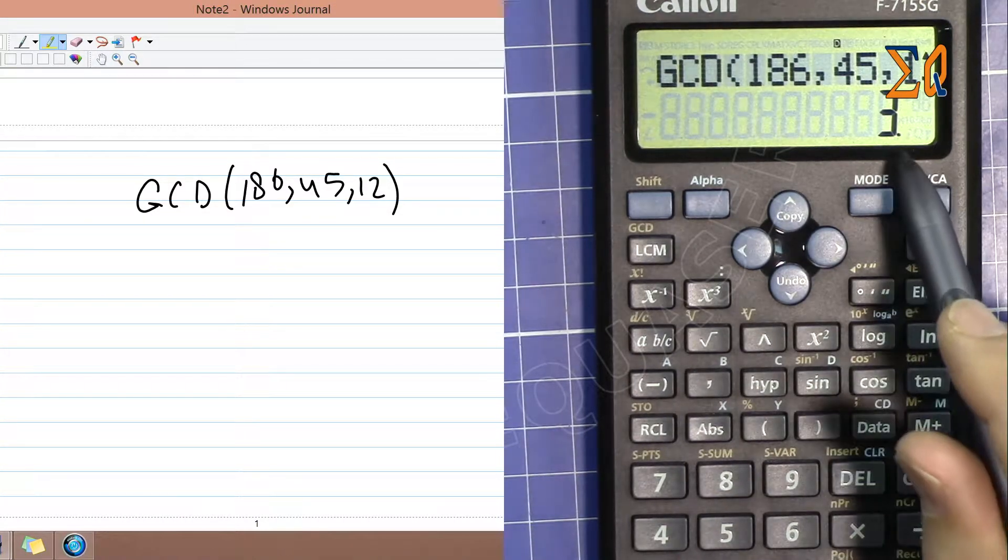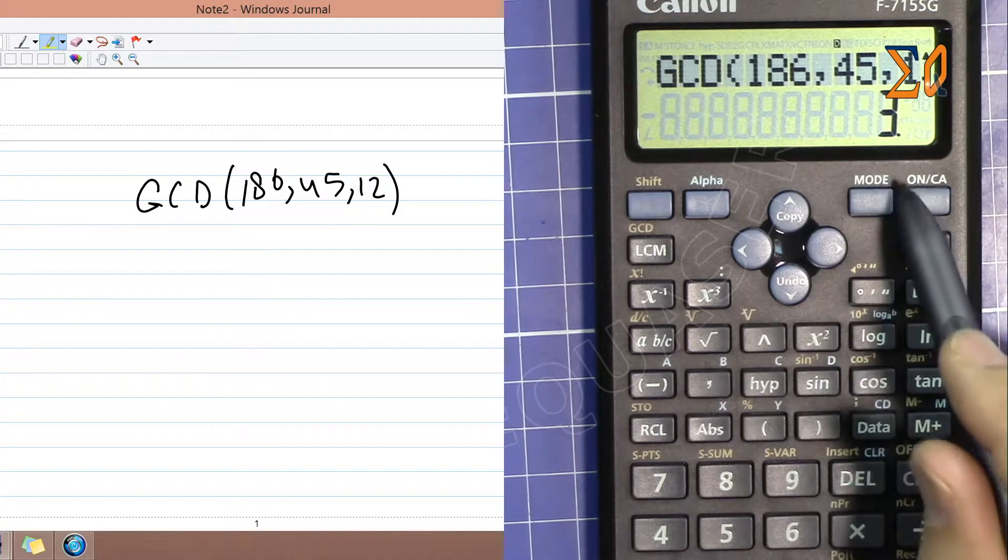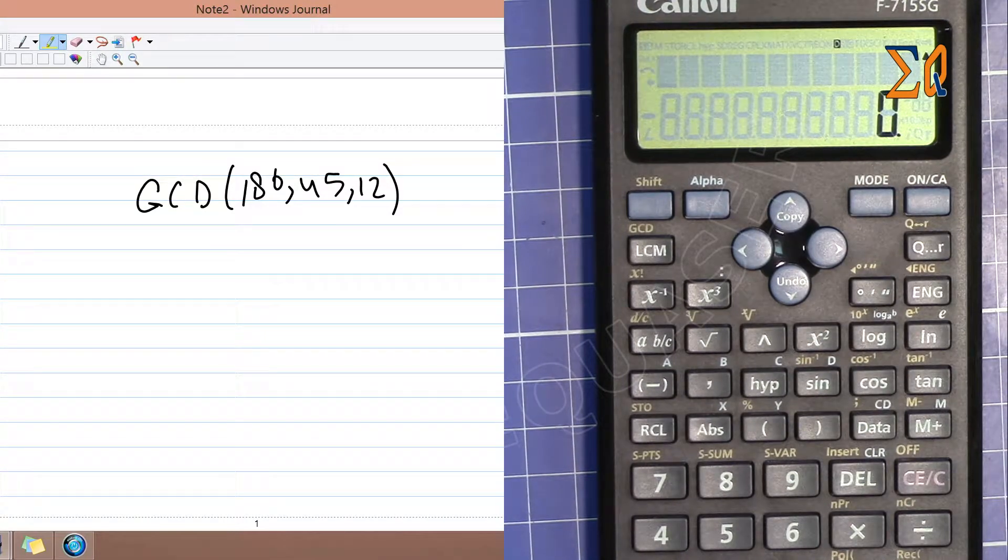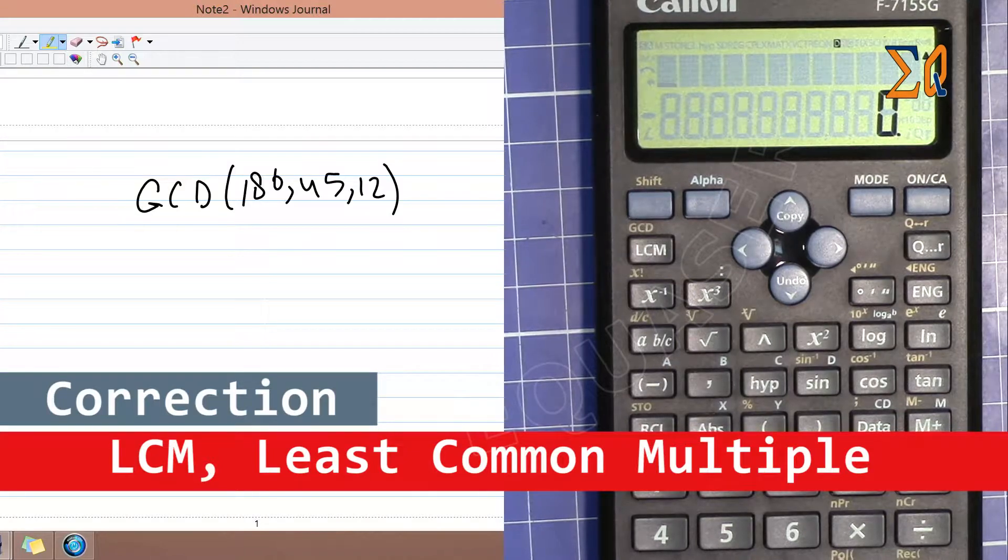Press equal sign, so the greatest common divisor for these values is 3. Now let's say we want to find the LCM, lowest common multiple.